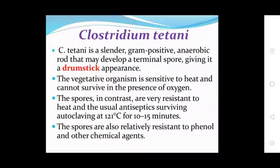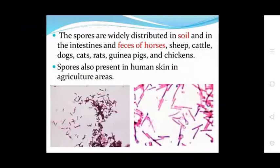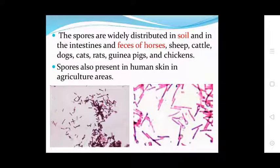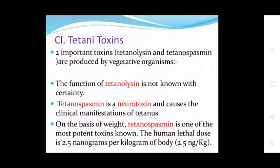The spores of C. tetani are very resistant to heat and antiseptics, surviving autoclaving at 121°C for 10 to 15 minutes. The spores are also relatively resistant to phenol and other chemical agents. The spores are widely distributed in soil and in the intestines and feces of horses, sheep, cattle, dogs, cats, rats, guinea pigs, and chickens. The spores are also present on human skin in agricultural areas.